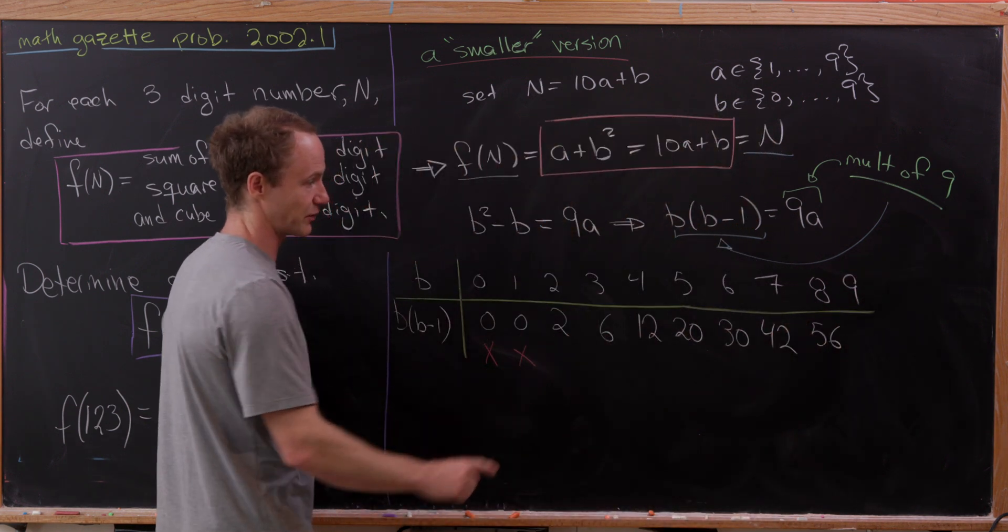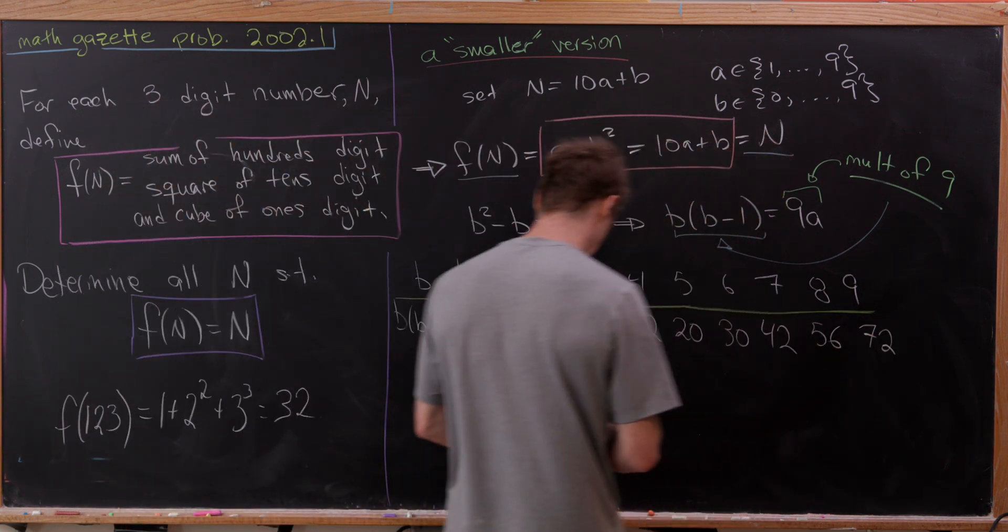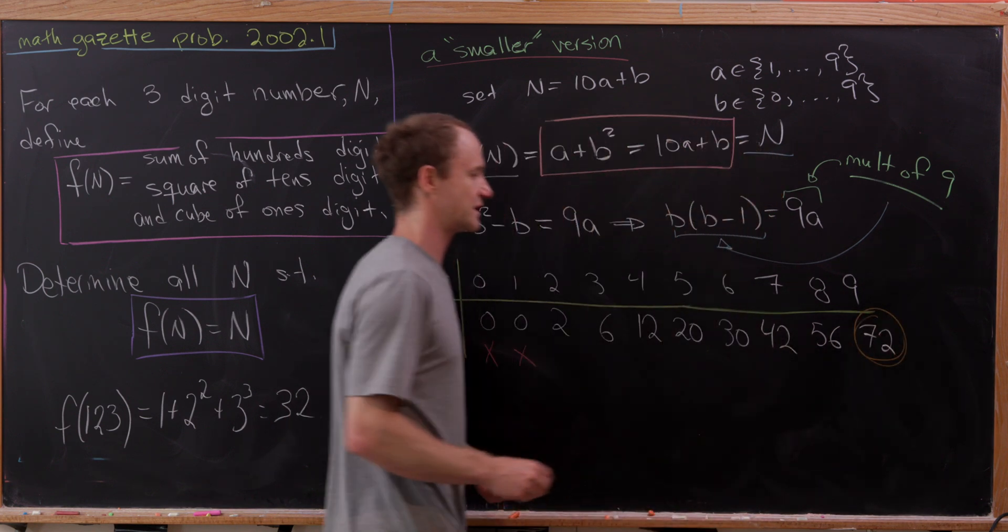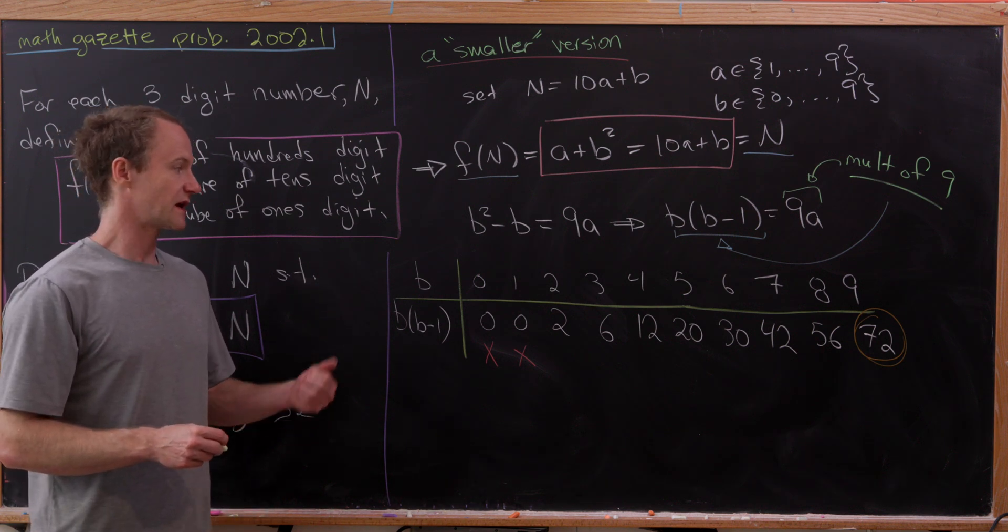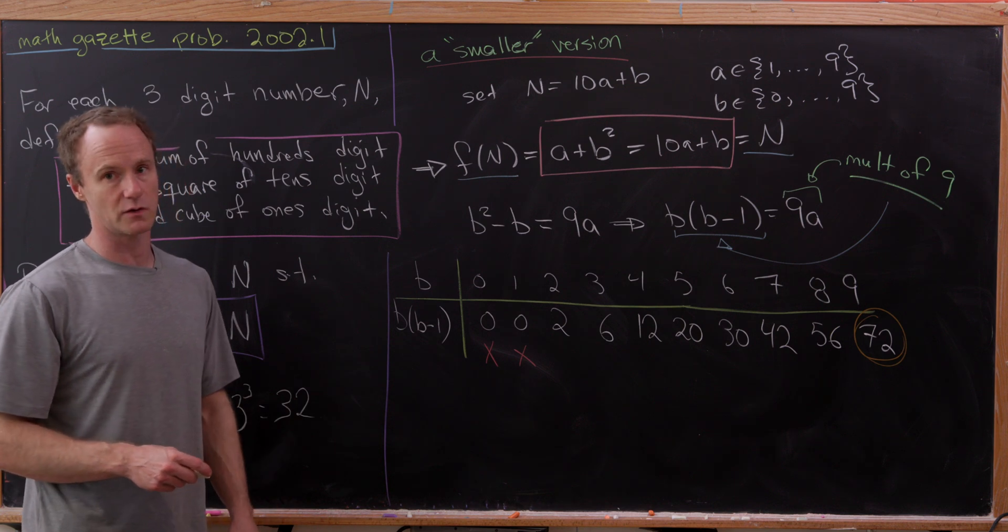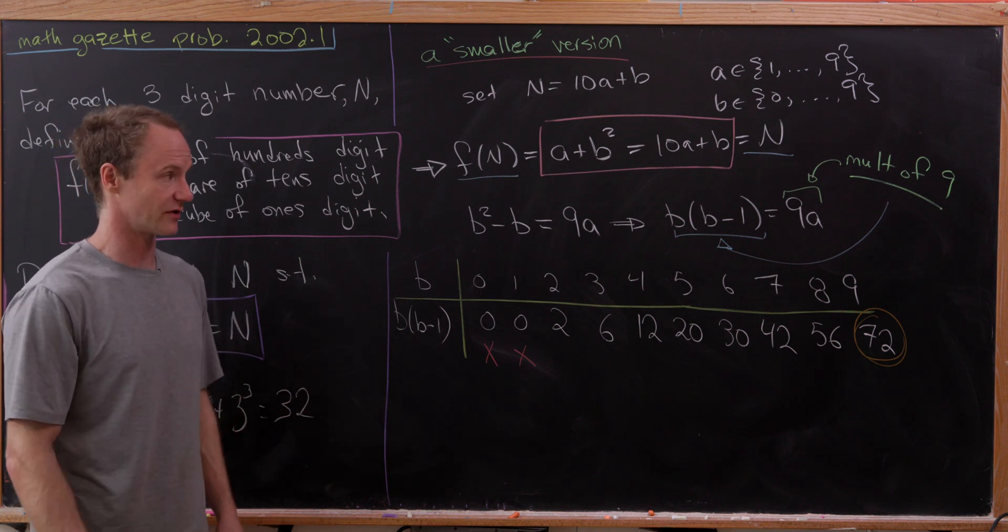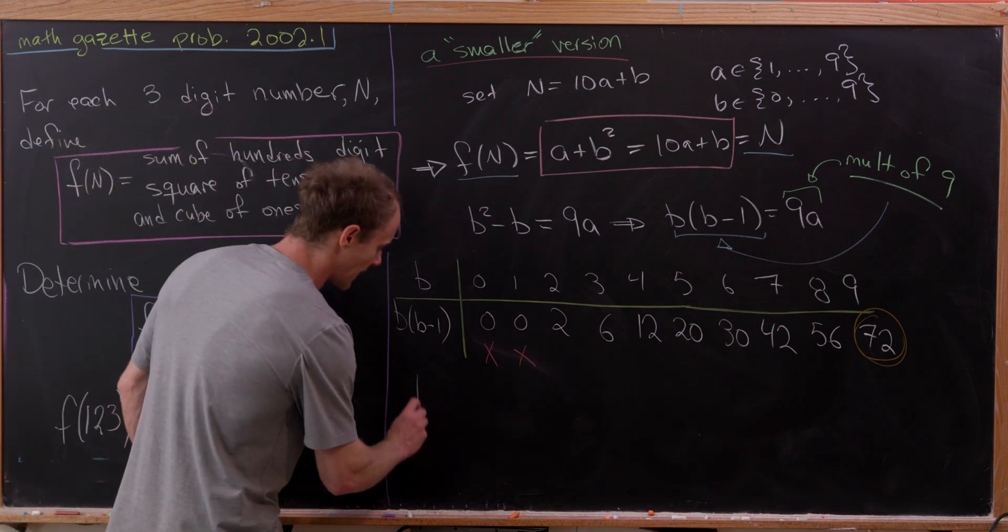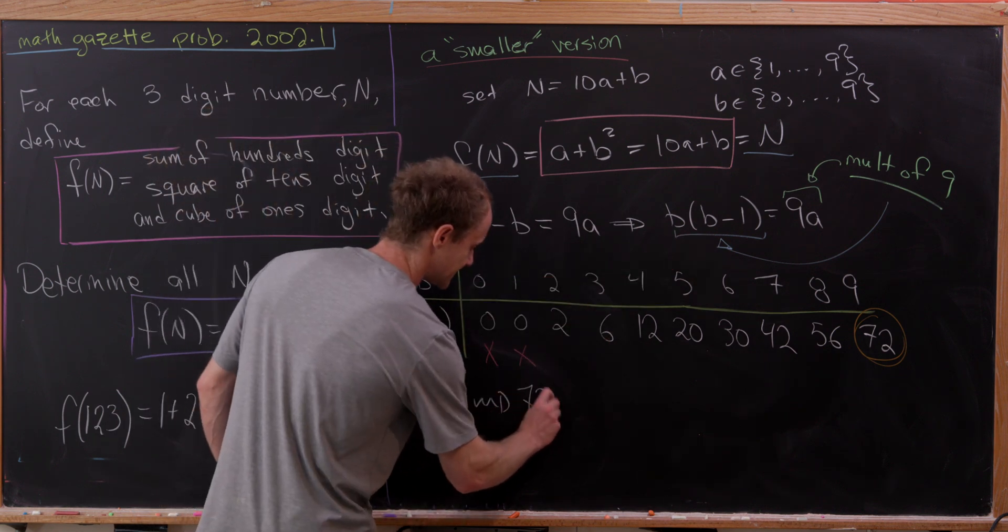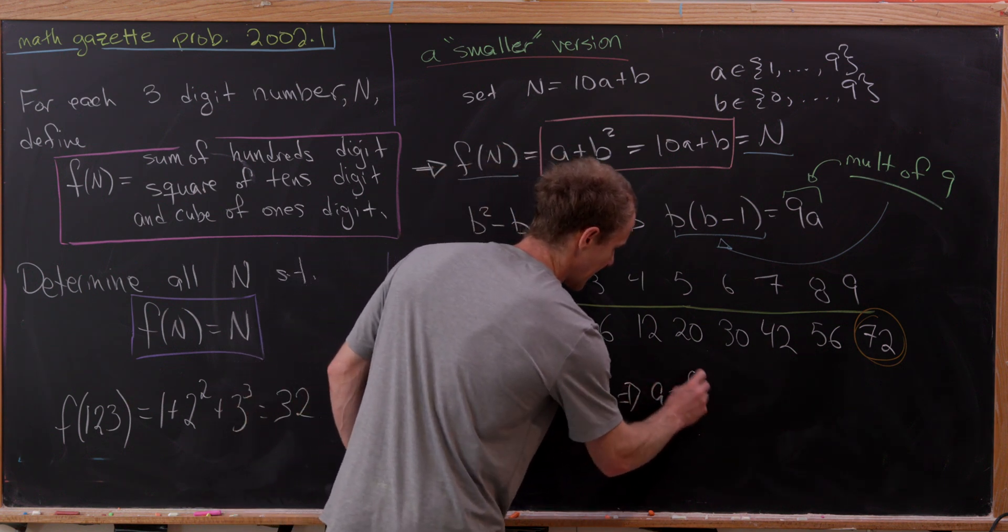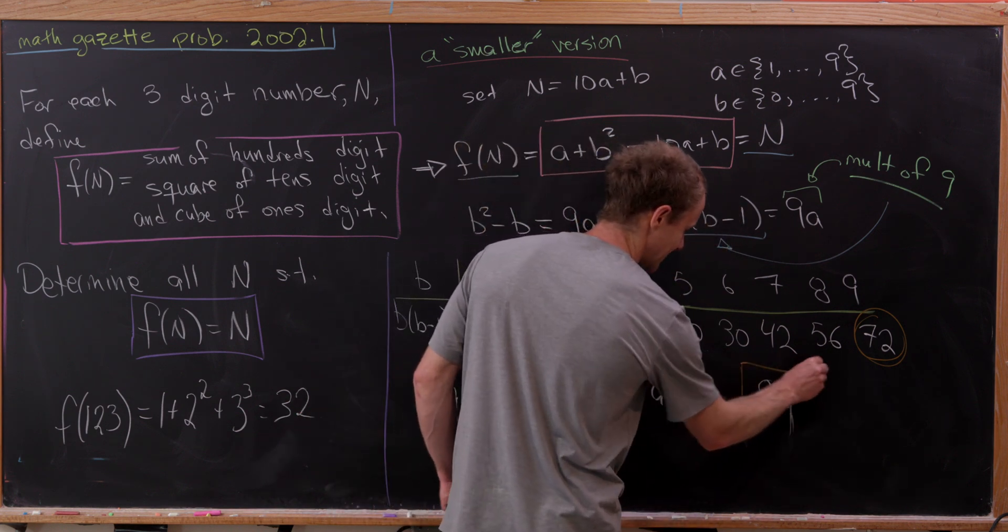Probably not surprisingly, we didn't really need to make this table. 9 times 9 minus 1 is 72. And in fact, this last one is the only one that gives us a real shot at a solution. The case when b is equal to 9, because that on that list is the only multiple of 9. Now if we have b equals 9, we have 72 equals 9 times a, which tells us that a is equal to 8. That gives us a single solution, and that single solution is 89.